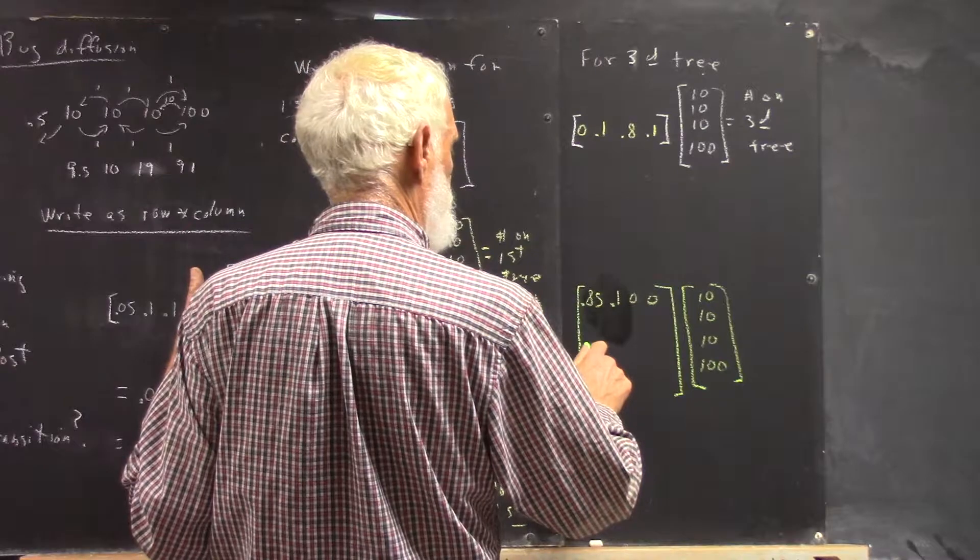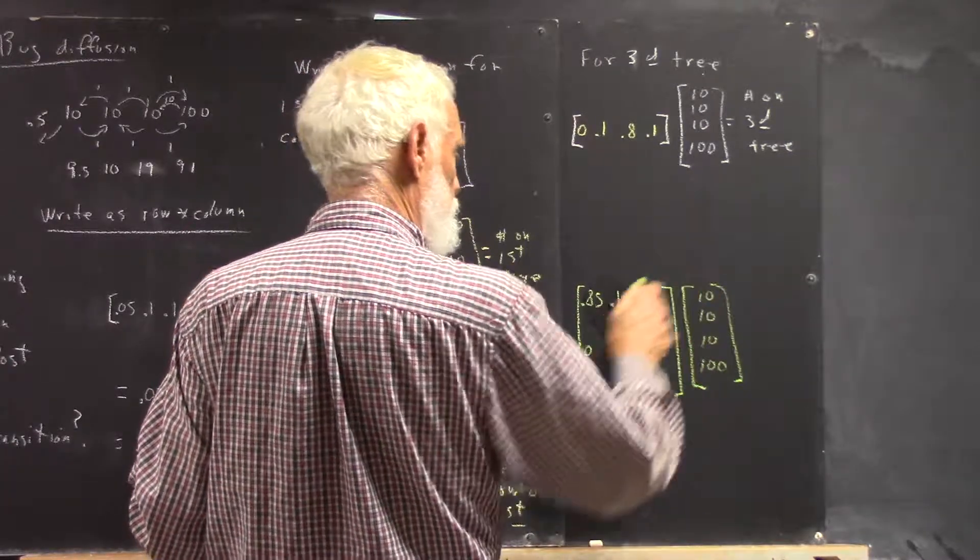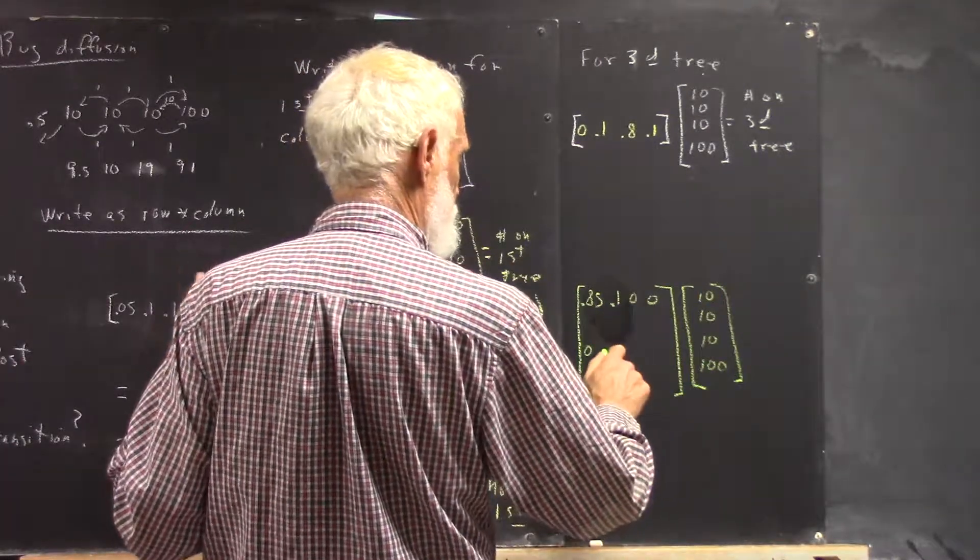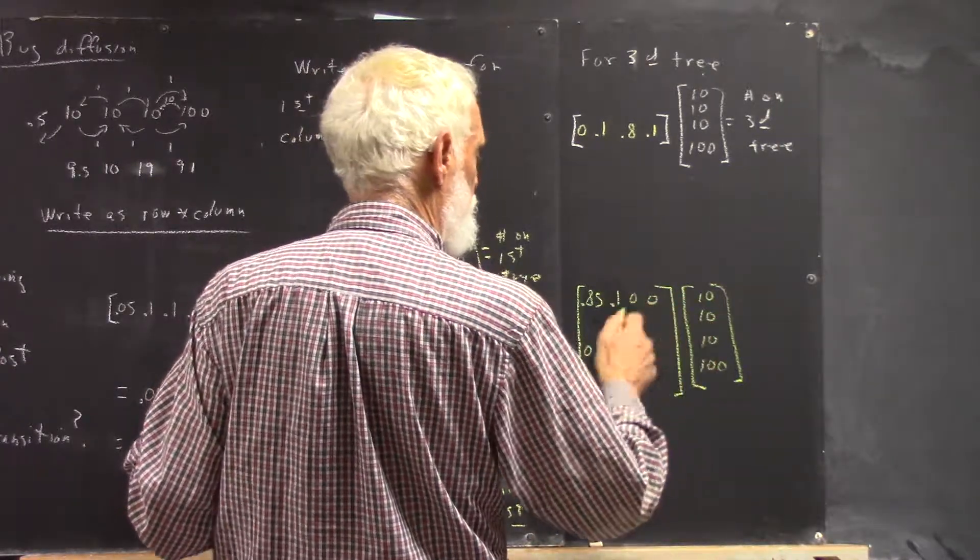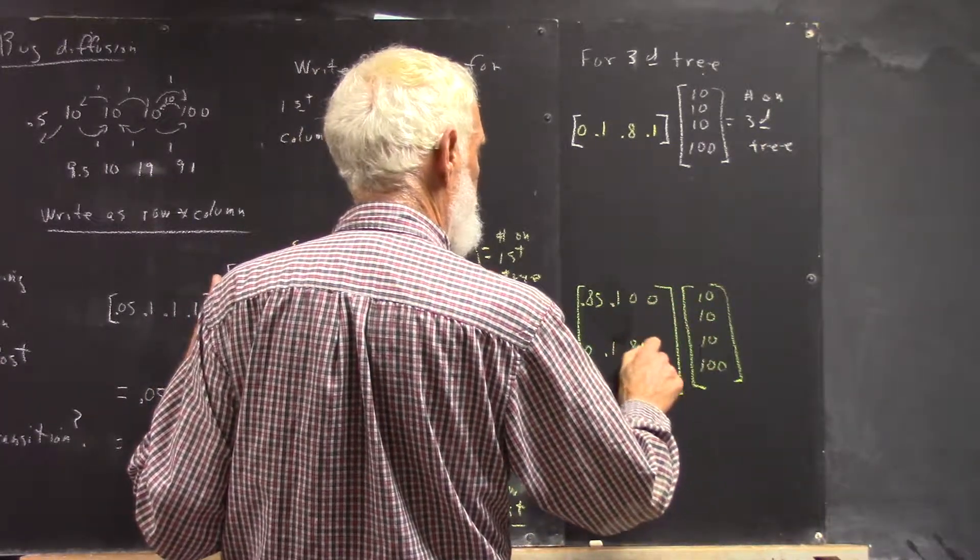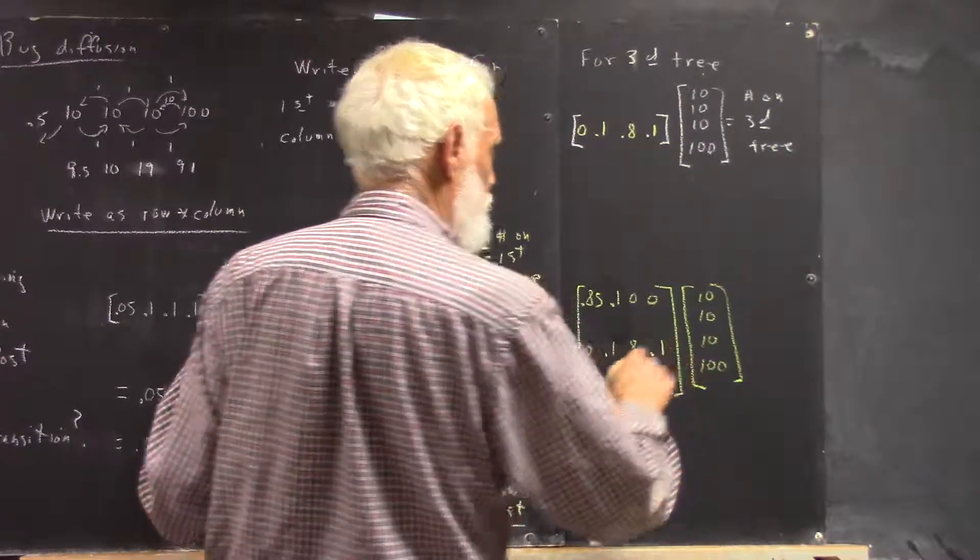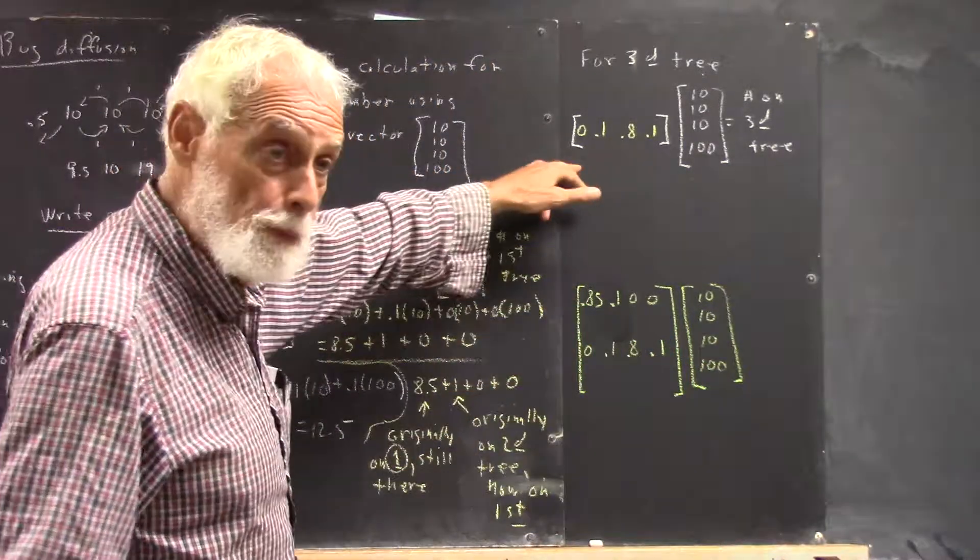Then, for the third row, of course, none of the bugs on the first tree go to the third tree. Ten percent of the bugs on the second tree go to the third tree. Eighty percent of those on the third tree stay there, ten percent on the fourth tree. So that's the one we just saw.